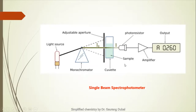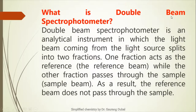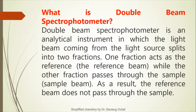Next, what is a double beam spectrophotometer? A double beam spectrophotometer is an analytical instrument in which the light beam coming from the light source splits into two fractions. One fraction acts as the reference beam and another performs as the sample beam, because it passes through the sample while the first one is only a reference beam without sample. As a result, the reference beam does not pass through the sample.